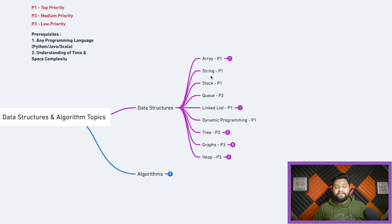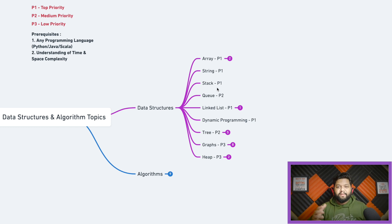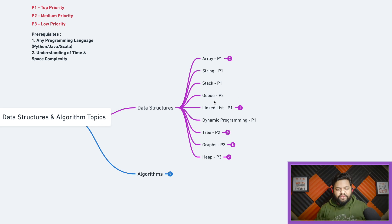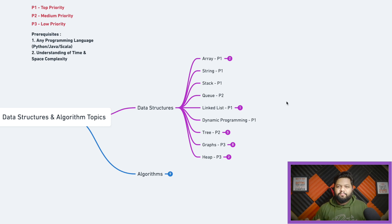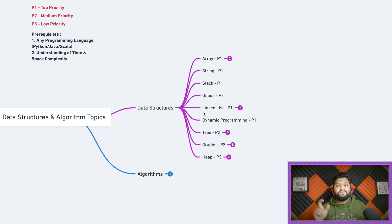Next is the stack data structure, which is very important. You should know its applications, what problem use cases make a stack a good fit, and how it works fundamentally. A classic coding question is checking if all given parentheses — curly braces, small brackets — are balanced. The queue is labeled P2 (medium priority). Within the queue topic there are multiple types, but just practice basic to medium level questions on plain queues. The next topic, linked lists, can be really important — in my Paytm data engineer interview, the interviewer asked me to reverse a singly linked list.